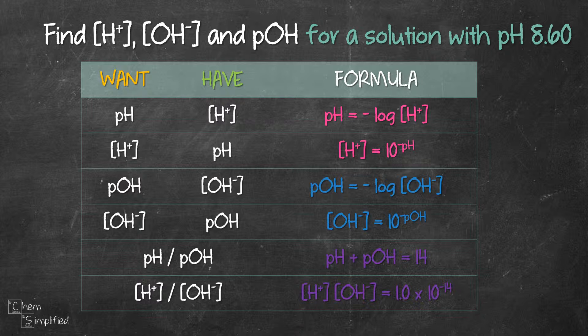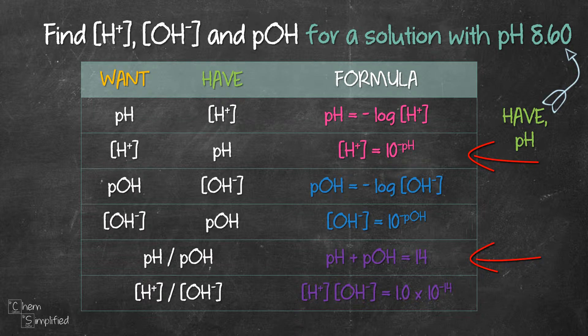Since we already have the pH, we can use this formula to find H+. We can also start with this formula to find pOH. Now it doesn't matter which formula we start with because we need to find both values anyway, so I'm just gonna go with the first one.